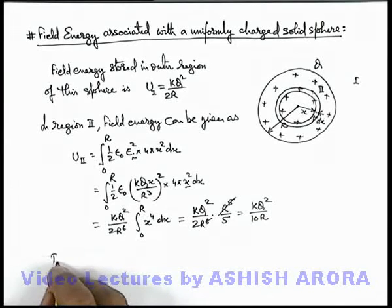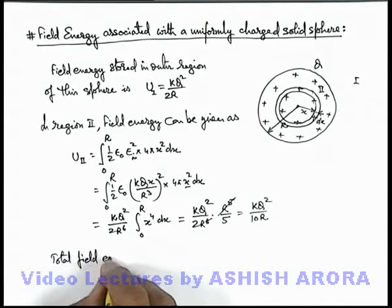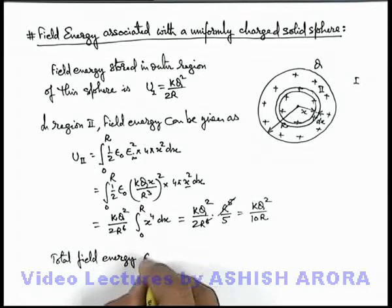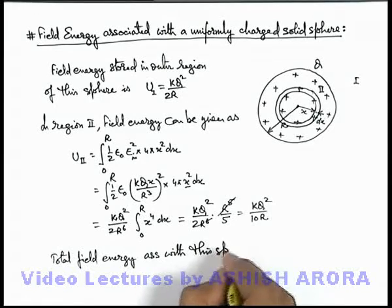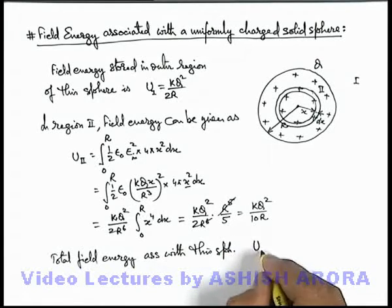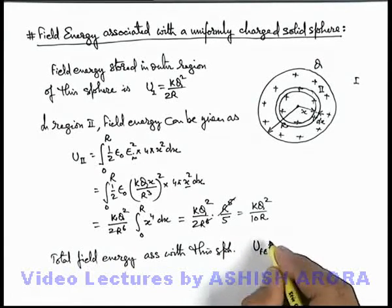So we can write total field energy associated with this sphere is, this can be easily given as U field energy, the sum of the energies in region 1 and region 2, that is kQ²/2R plus kQ²/10R.